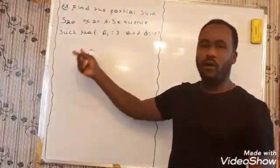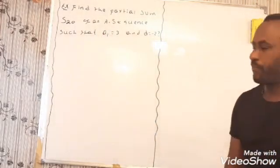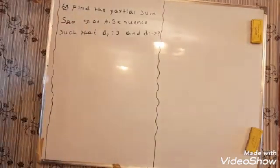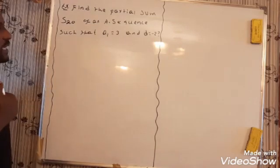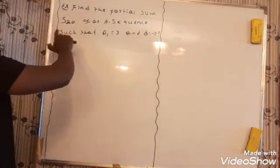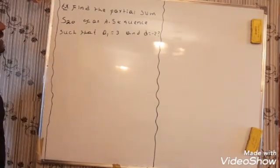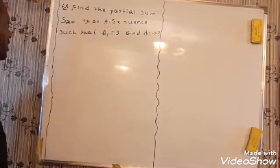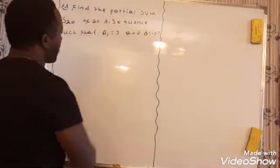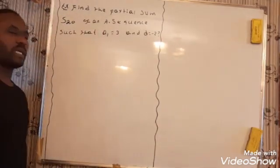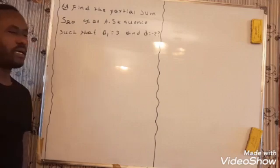Now let's see how to solve this problem in general. In order to find this problem, let me read what the problem says: Find the partial sum S20 of an arithmetic progression, where the first term of the sequence is 3 and the common difference between the terms is exactly minus 2.